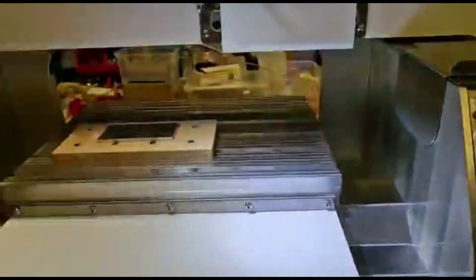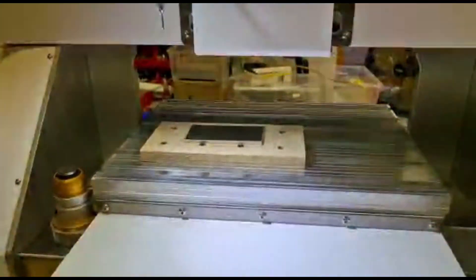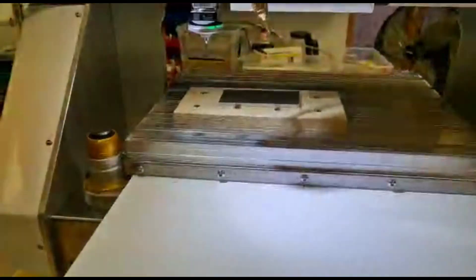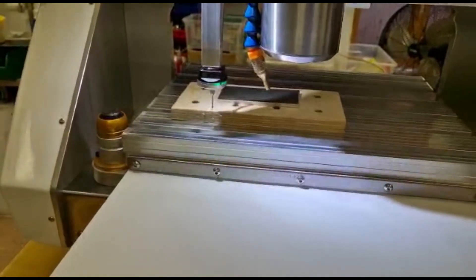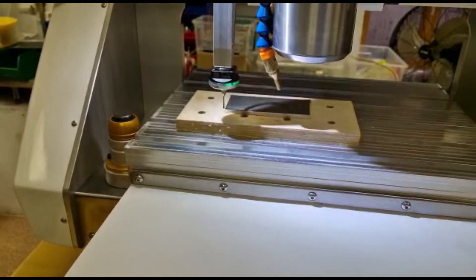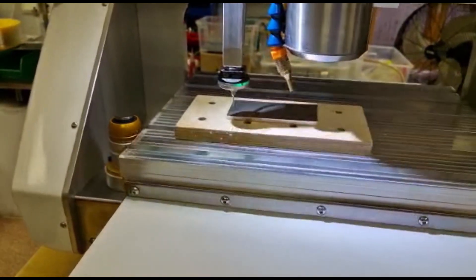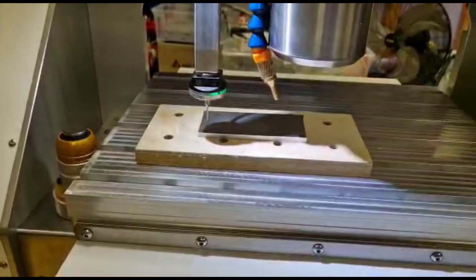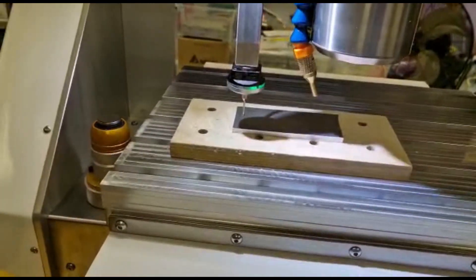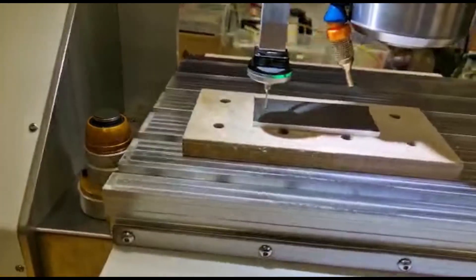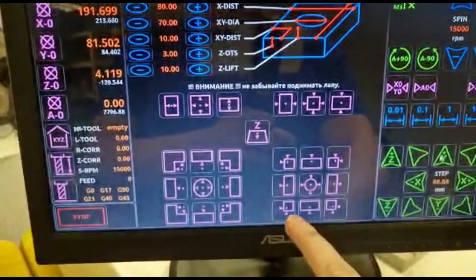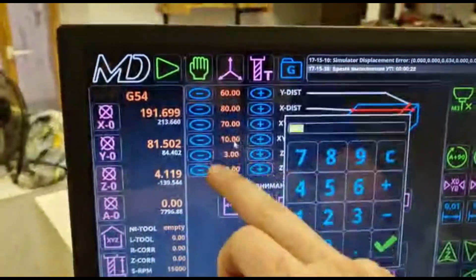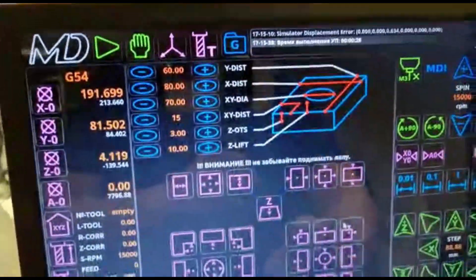After that, we'll move the machine over to our preferred corner and lower it. Then we'll select the find external corner procedure with a clearance of 15mm.